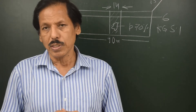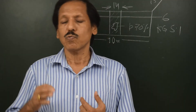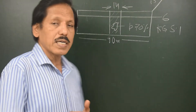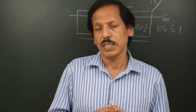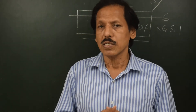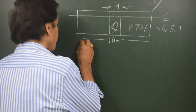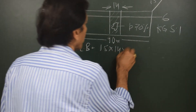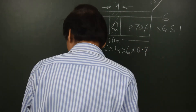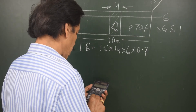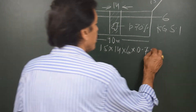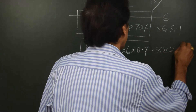We'll proceed like the last question: wherever there is a loss, we multiply it by the permeability. There are three kinds of losses — lost buoyancy, loss in waterplane area, and loss in moment of inertia. So lost buoyancy is 15 × 14 × 6 × 0.7, which gives 882 cubic meters.